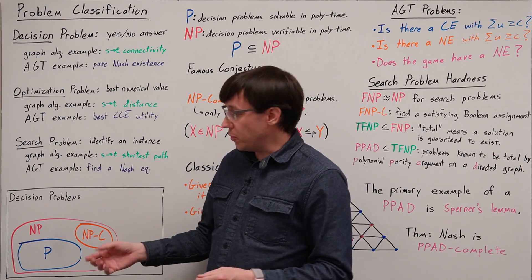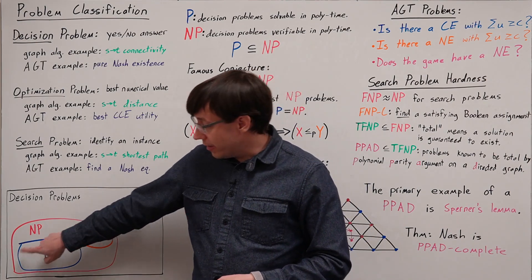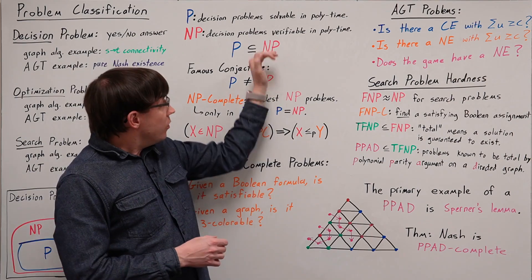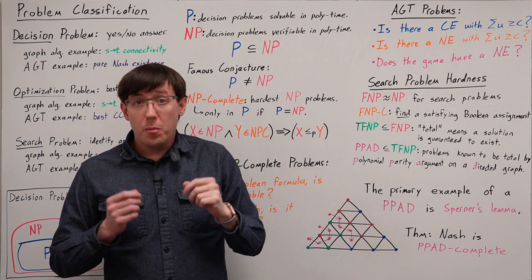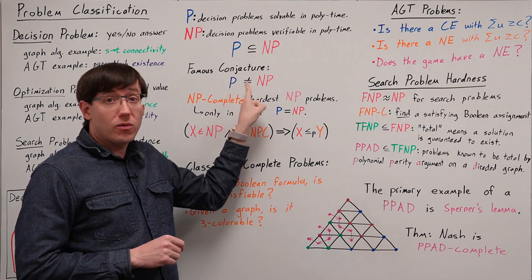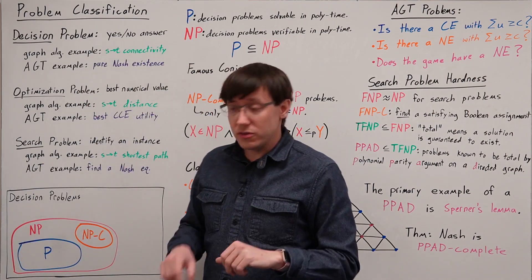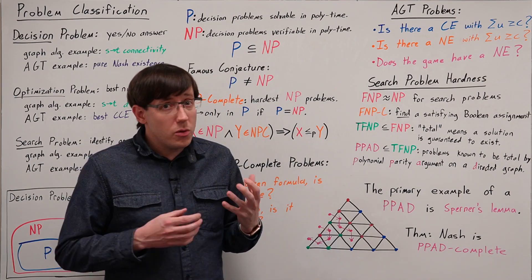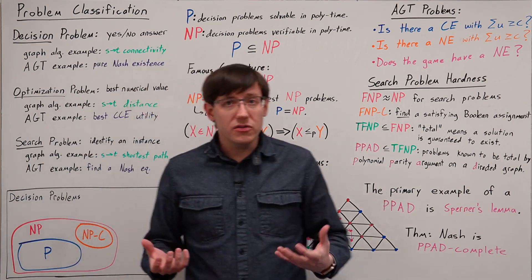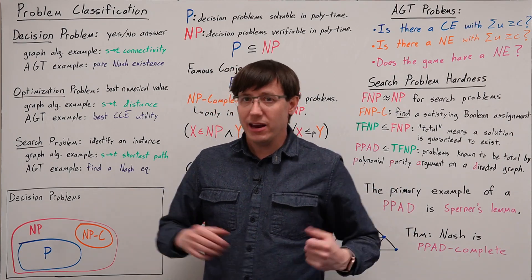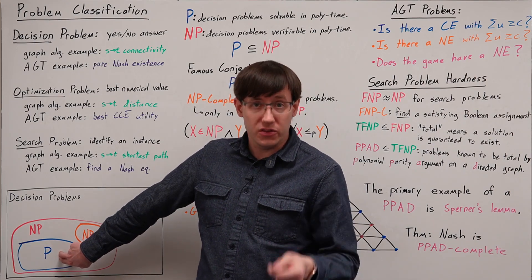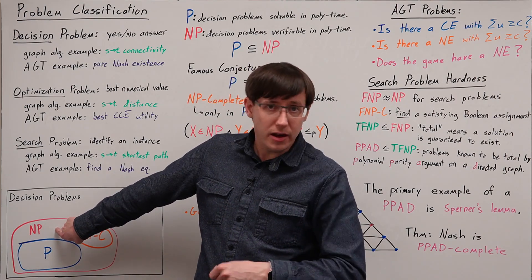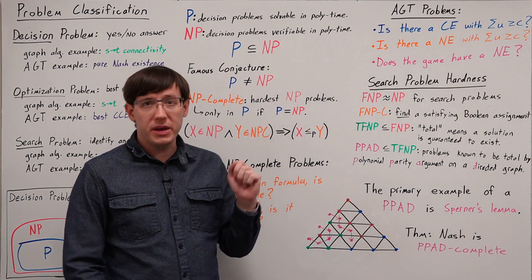So it seems like there should be decision problems that are efficiently verifiable but are not efficiently solvable, and that gives us the P ≠ NP conjecture. It's well known that there is a subset relationship between P and NP, but it still remains an open conjecture that the relationship is strict. There's lots of good evidence in the form of problems that we know how to efficiently verify but don't know how to efficiently solve, yet there is no known proof that these sets are not equal. And this means that if we want to prove that a problem is hard, we can't realistically hope to prove that the problem is not in the set P, because if we could identify a single problem that's in NP but not in P, we would have proven the P ≠ NP conjecture.